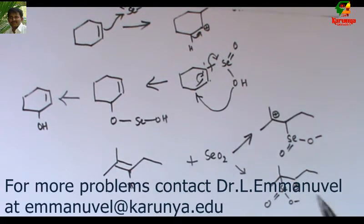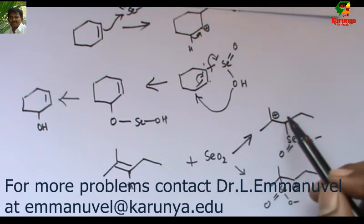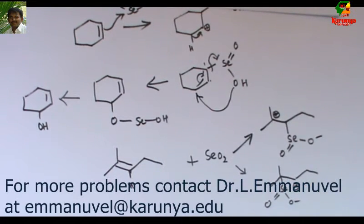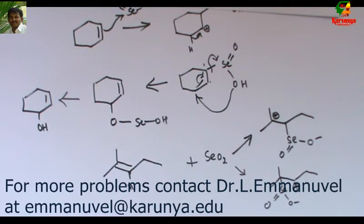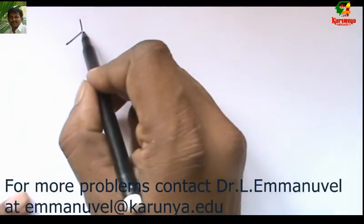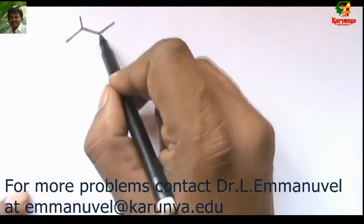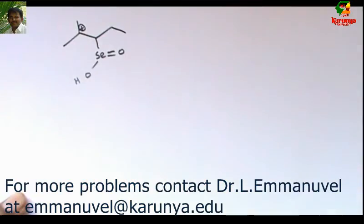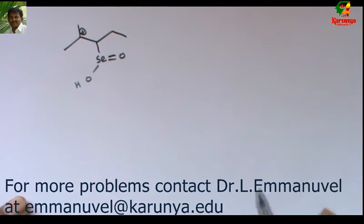The reason is the product formed afterwards is a tertiary carbocation, but here it is secondary. Based on steric hindrance also I can explain. If this carbon attacks selenium dioxide, that is this one, the steric hindrance will be huge. So to avoid that, this carbon attacks the selenium dioxide. Now let us try the mechanism on the compound. This is most preferred than the other one.